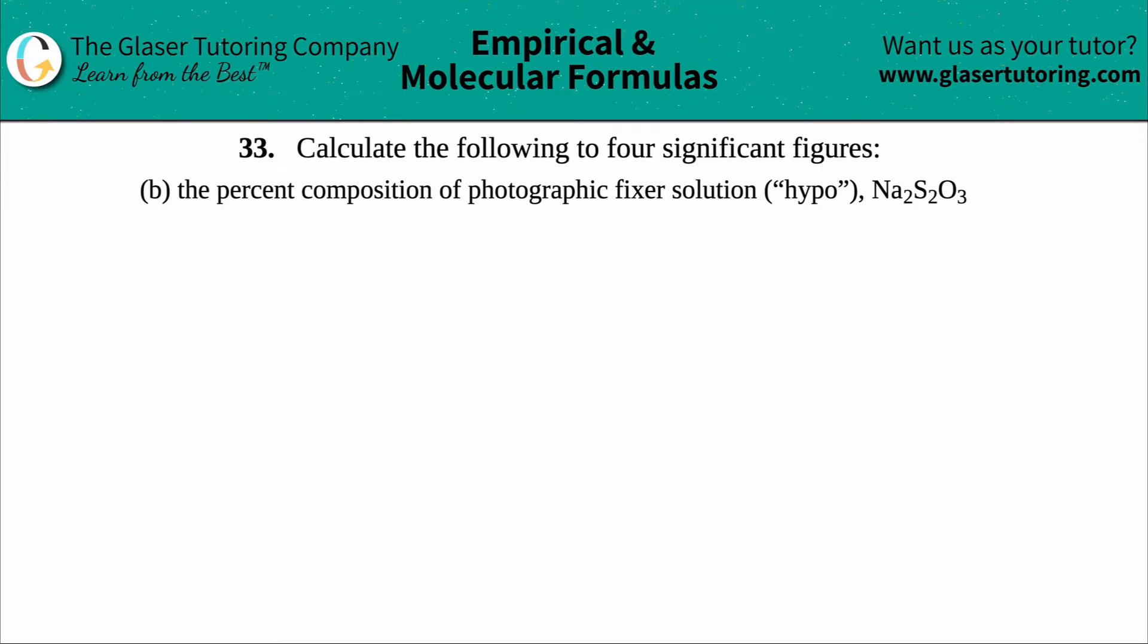Number 33. Calculate the following to four significant figures. And then we have letter B. In this case, we have to find the percent composition of photographic fixer solution, aka hypo, which is Na2S2O3.